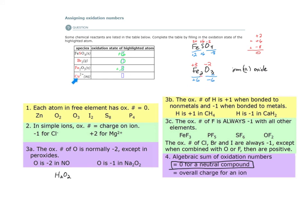Here we have a copper two-plus ion. Rule one doesn't apply because it's not elemental copper — it's an ion. So we use rule two: for simple ions, the oxidation number is equal to the charge of the ion. The charge of the ion is positive two, so the oxidation number of copper here is +2.